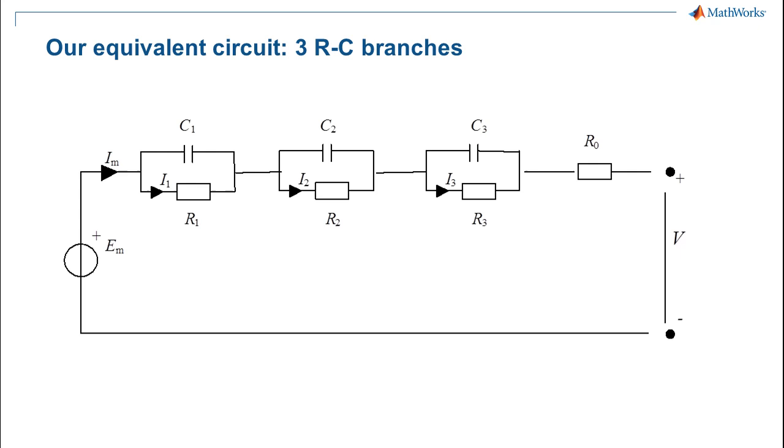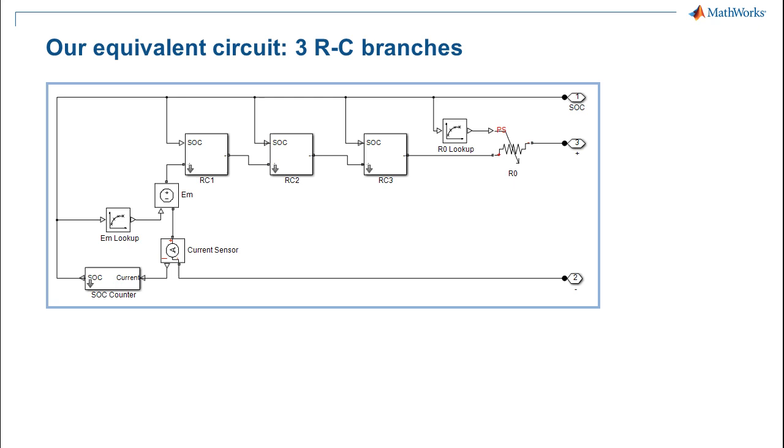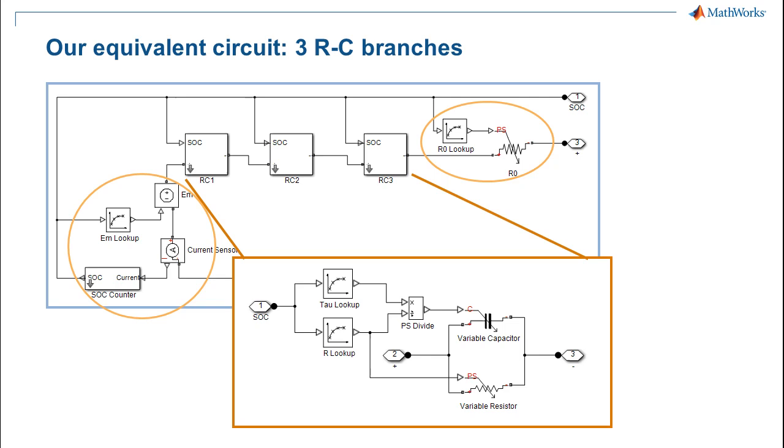So our equivalent circuit model looked like this with three RC branches. And here is the Simscape model representation we used for estimation at a single temperature and current. On the left, you can see the open circuit voltage which is dependent on SOC. On the right, the terminal resistance R0. In the middle, we placed RC branches. One represents the slower time constant of the response, and the other two branches represent much faster time constants. The models use parameters R for resistance and tau for the time constant for the RC parts of the circuit. Using the time constant parameter helps us better visualize and understand the effect that each RC branch has on the simulated result.